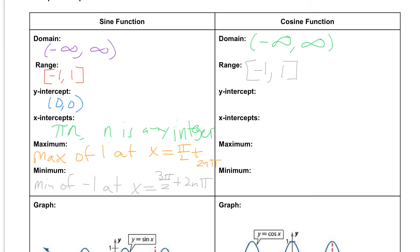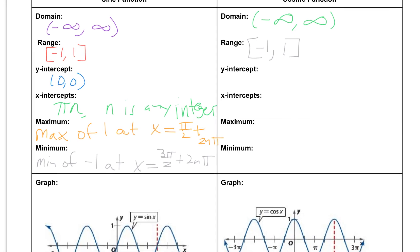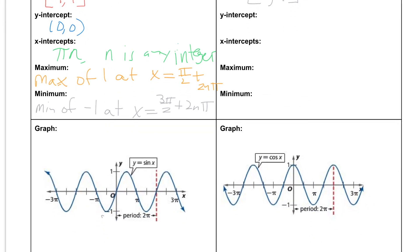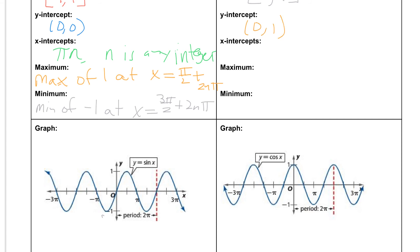If we take a look at the y-intercept, our y-intercept for the cosine function is at the point (0, 1). That's different from our sine function, where the y-intercept was at (0, 0).